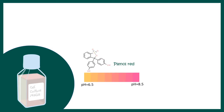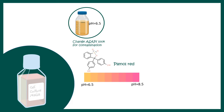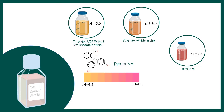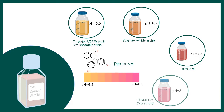Cell culture media also contains a pH indicator such as phenol red, which indicates a pH range of 6.5 to 8.5. At pH 6.5, the media turns yellowish, indicating it needs an immediate change or possible contamination. An orange color means it should be changed within a day. A deep red color indicates pH around 7.4, which is perfect. A pinkish color suggests CO2 concentration has been altered and the CO2 supply needs to be checked.